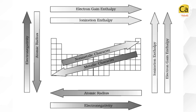To summarize all the trends: electron gain enthalpy, ionization enthalpy, and electronegativity increase as you go from left to right, while atomic radius decreases from left to right. From top to bottom, ionization energy, electron gain enthalpy, and electronegativity decrease, while atomic radius increases. More metals are found on the left-hand side of the periodic table, and more non-metals on the right-hand side. Remember that when we talk about trends, we always refer to the magnitudes of these quantities, not their signs. This was a quick revision of the chapter of Periodic Properties.